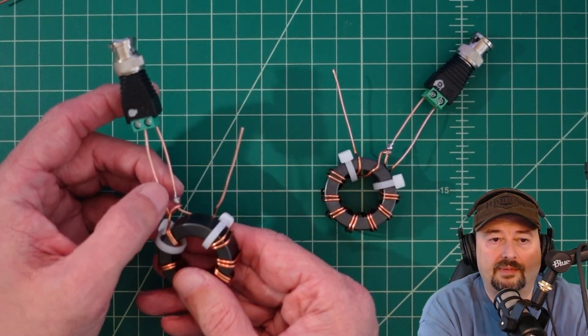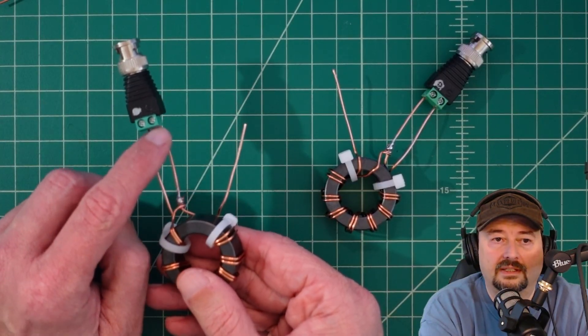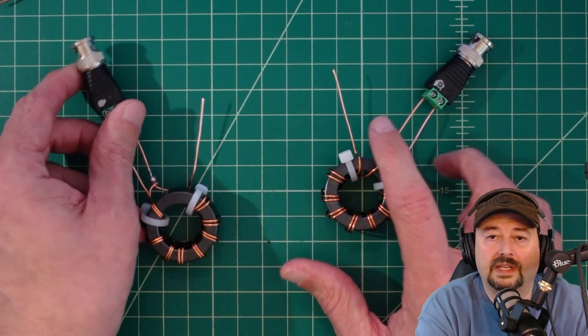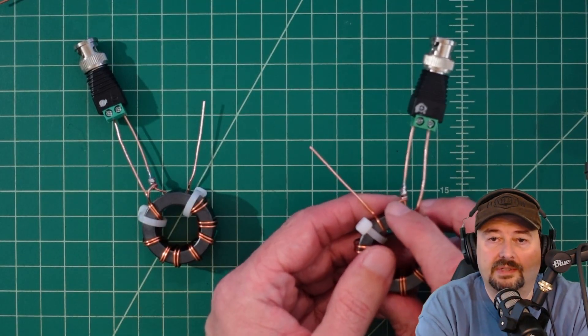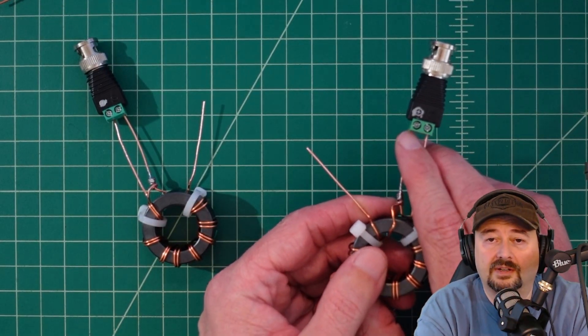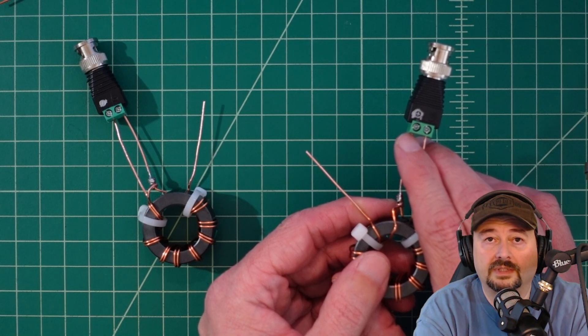When you take a look at this one, you can see that the center tap is directly connected to the shield. Over on the unun, you can see that the center tap is directly connected to the center conductor of our coaxial cable. That's the difference.